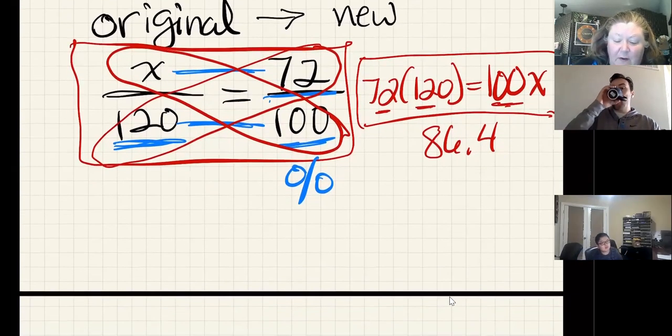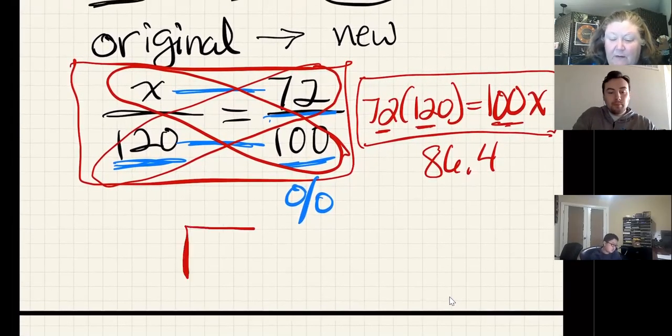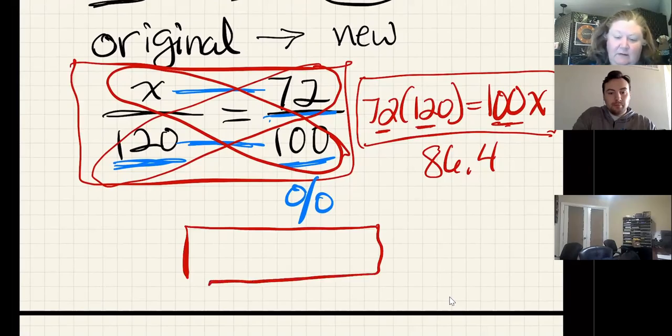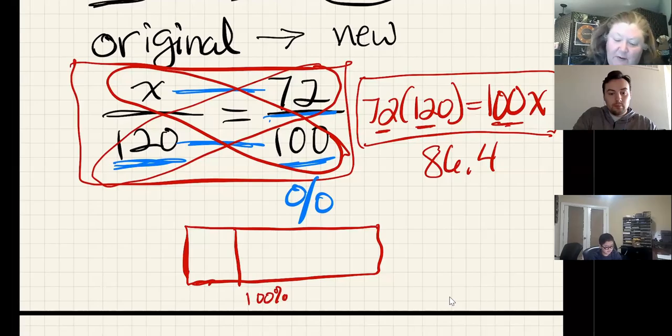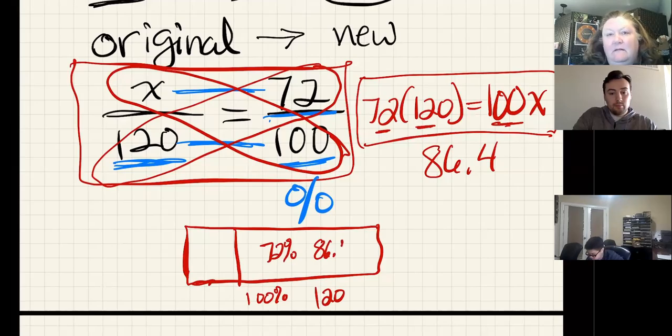If we're looking at that drawing that's on there, where it shows 100 percent of the original, and then it shows the amount that it's smaller by—100 percent of this was your 120. It's showing us that it was going to be reduced by 72 percent or 72 percent shorter, so this amount is 72 percent, which would be 86.4. What does that mean? That this smaller amount is...